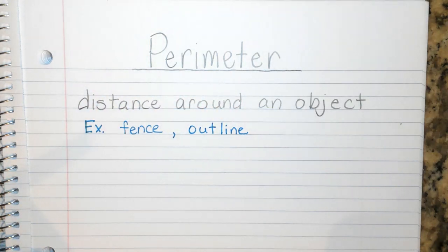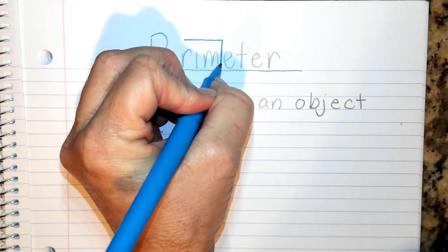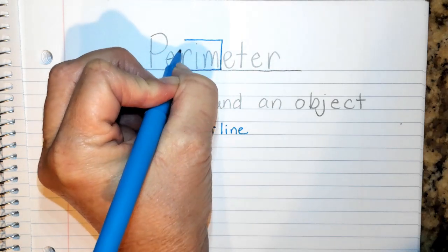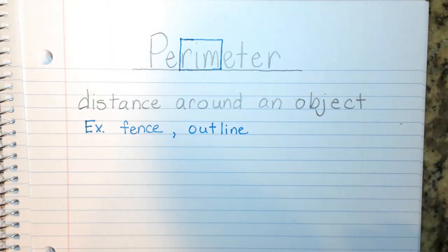And there are other examples of when we use perimeter, but mainly what I want you to remember today is perimeter is the distance around, and that's what you're going to be doing today.